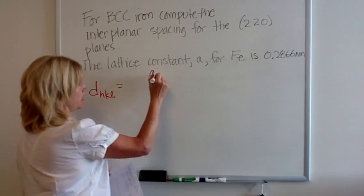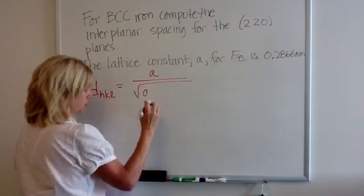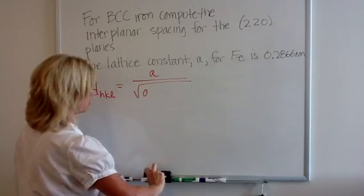d is equal to a, the lattice constant, over the square root of h squared plus k squared plus l squared.